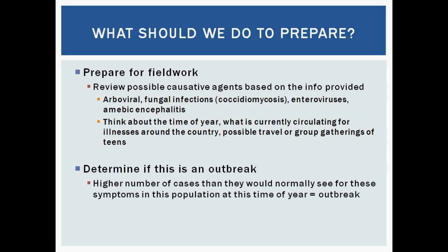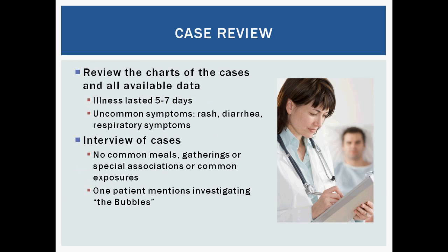Some of the first things we're going to do when we go out into the field is do a review of the charts of the cases. Can we see the notes from the physicians? Can we look at lab testing that was done? We want to see how long the illness was lasting and get a good feel for the symptoms. In this investigation, we're going to find out that the illness lasts about five to seven days, and that rash, diarrhea, and respiratory symptoms are uncommon. We're also going to interview the cases and try to figure out if there are any commonalities between all these teenagers. When we interview them, we find there are no common meals, no gatherings or special occasions — so it's really hard to find a common exposure at first glance.